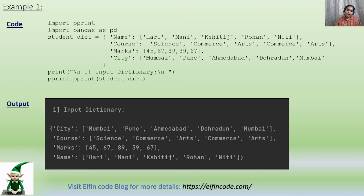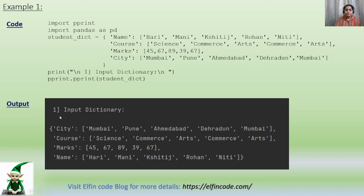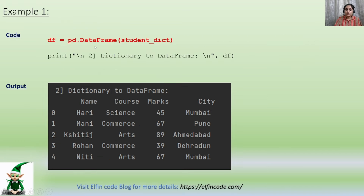Now let us move ahead with our example. We have a student dictionary with four key-value pairs: Name, Course, Mark, and City are the keys, and we have lists of names and courses as the values of each of these respective keys. Here I have just printed the input dictionary. Now let us convert this dictionary into a DataFrame. That is done using the code: df = pd.DataFrame(student_dictionary). So our dictionary is converted to a DataFrame format with four columns and five rows.